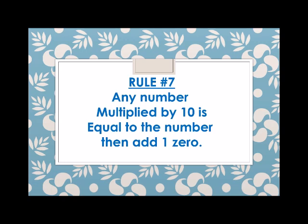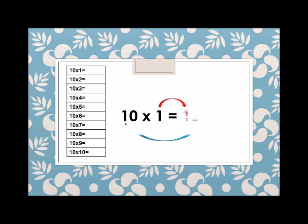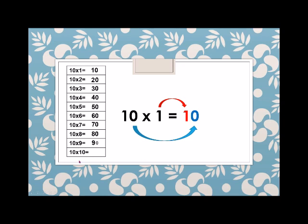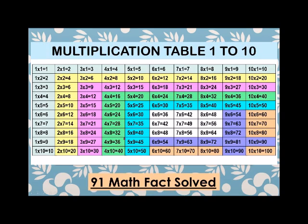Rule number 7: any number multiplied by 10 is equal to the number, then add a 0. So 10 times 1 is 10, 10 times 2 is 20, 10 times 3 is 30, 10 times 4 is 40, 10 times 5 is 50, 10 times 6 is 60, 10 times 7 is 70, 10 times 8 is 80, 10 times 9 is 90, and 10 times 10 is 100. We just solved 91 math facts.